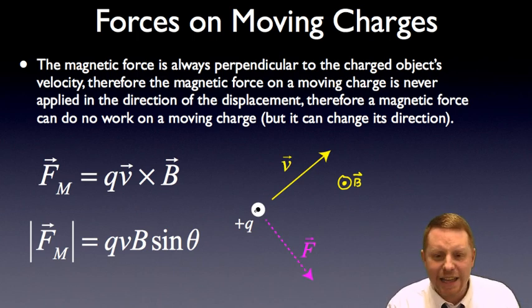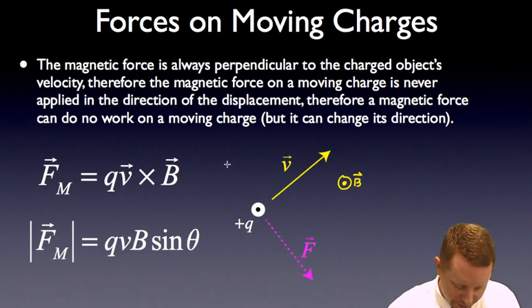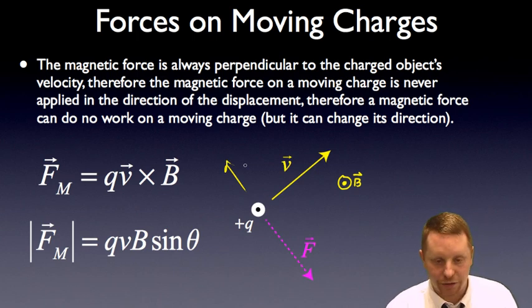If this were a negative charge, instead of a positive charge, however, you would use the left hand rule, point the fingers of your left hand in the direction of the negative particle's velocity, bend them in the direction of the magnetic field, and your thumb would point in the direction of the force. In this case, that would be if it were a negative charge in that direction.